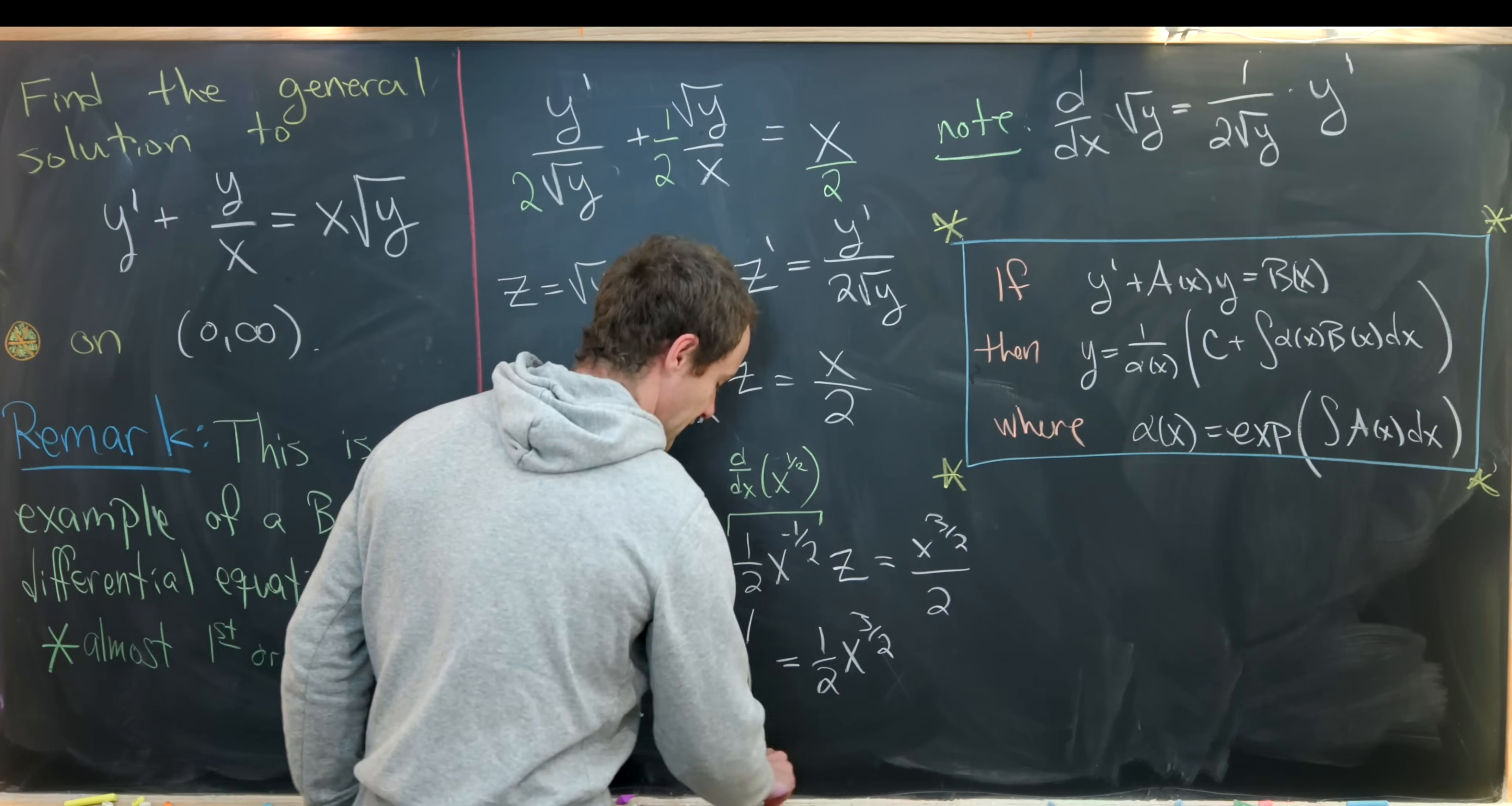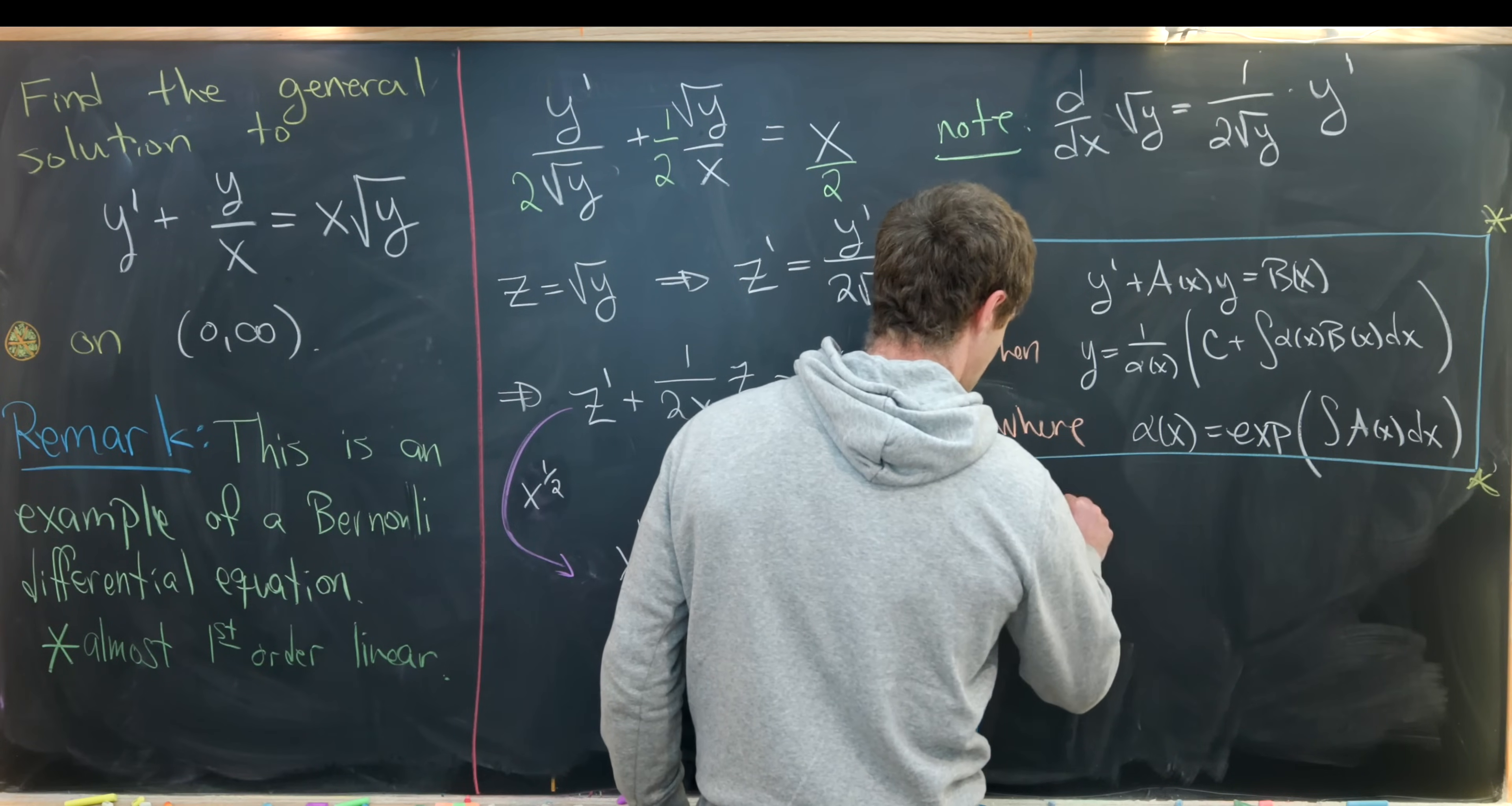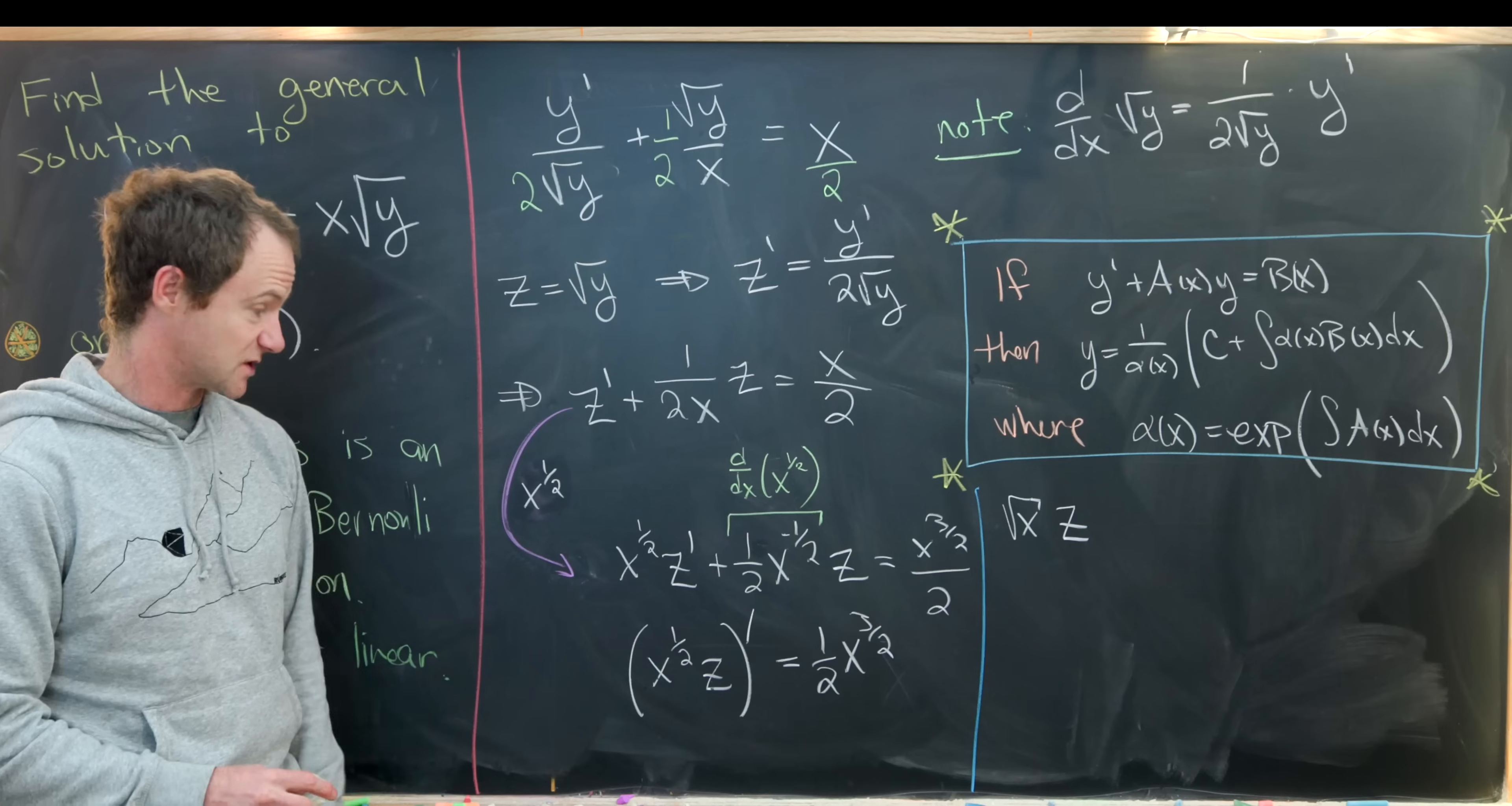Now we can take the anti-derivative of both sides, and doing that will allow us to solve for z pretty handily.